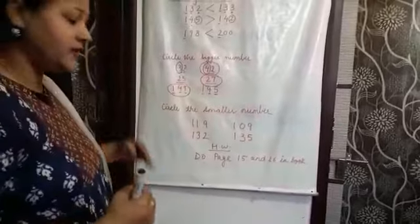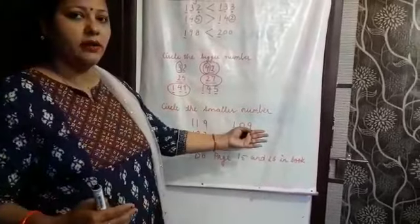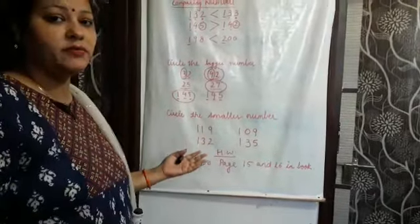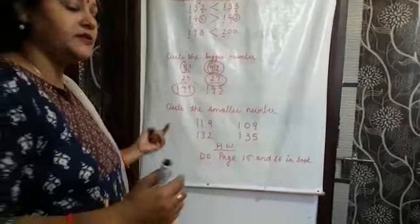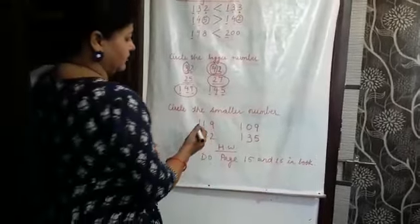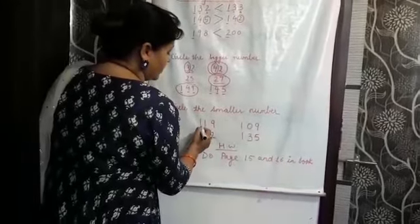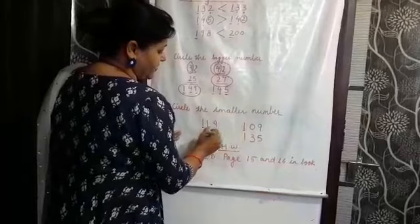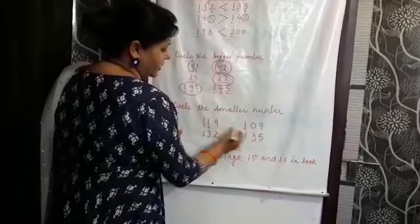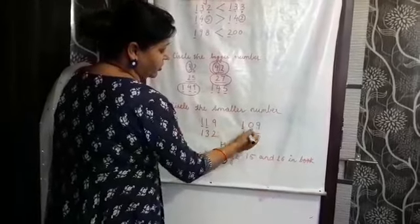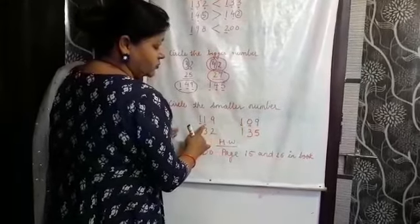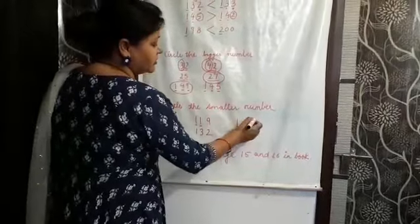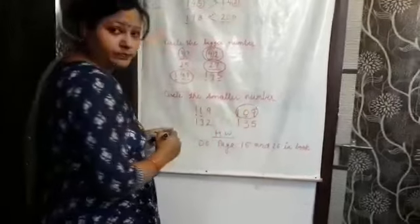In the same manner, you will circle the smaller number. Now you will see which number is smaller — that side you will circle. The hundreds place: 1 and 1 are the same. Now compare the tens place: here it is 1 and here it is 0. That means 1 is bigger than 0, so this number is smaller.